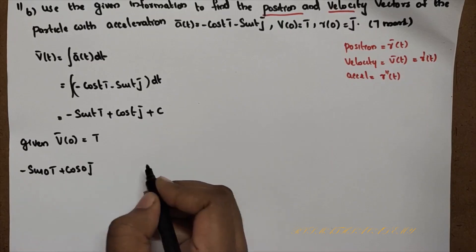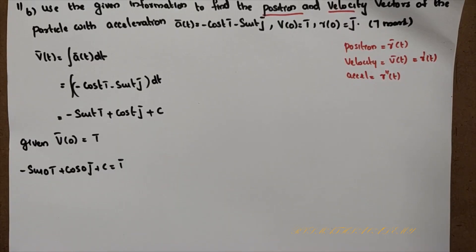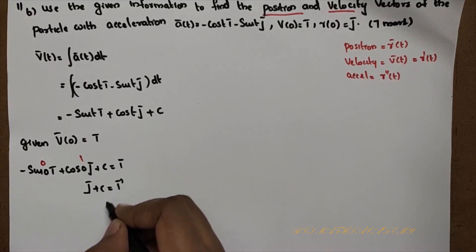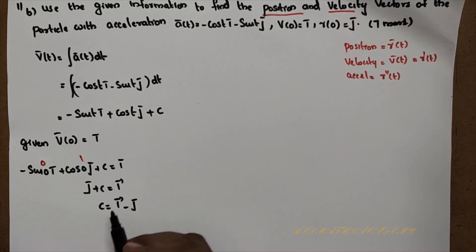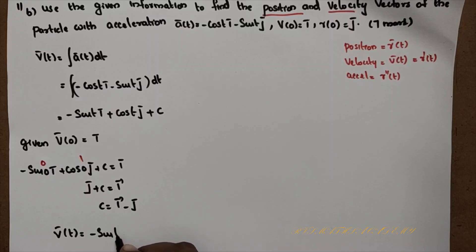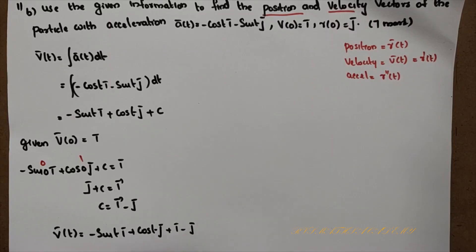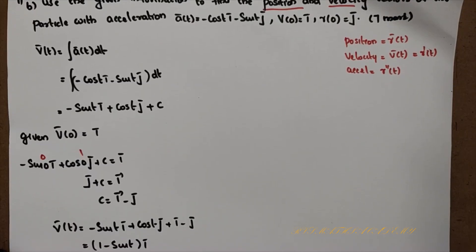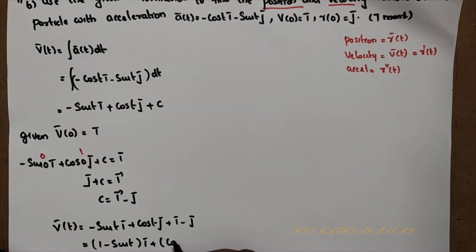Substituting t=0: v(0) = −sin(0) i + cos(0) j + C = 0·i + 1·j + C = j + C = i. Therefore C = i − j. So the velocity vector is: v(t) = (1 − sin t) i + (cos t − 1) j.